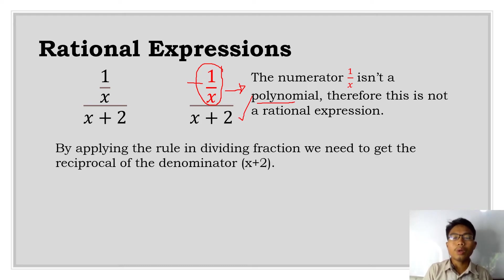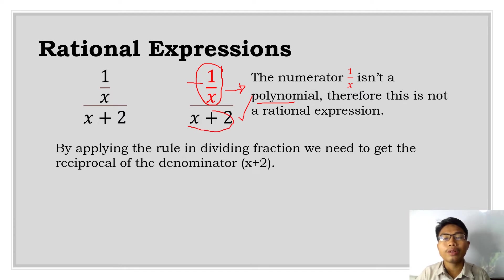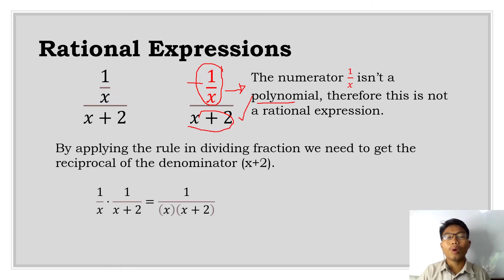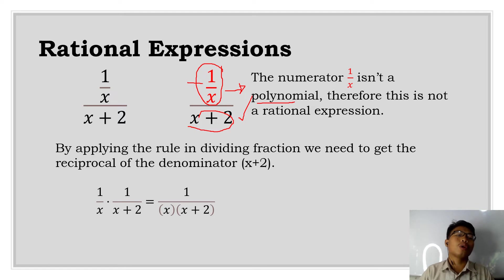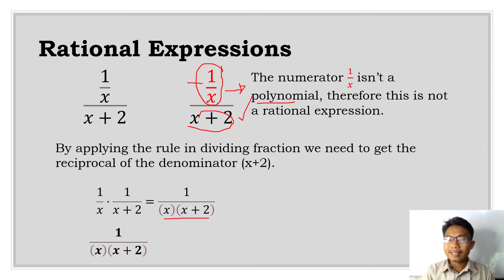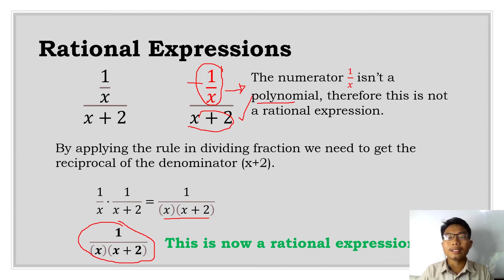However, we can apply algebraic simplification. Since x plus 2 is your denominator, we get the reciprocal of the denominator. When dividing fractions, we take 1 over x as our numerator, change the operation to multiplication, and multiply by 1 over x plus 2 — the reciprocal. So 1 times 1 is 1, and x times x plus 2 gives us 1 over x(x+2). The example is now a rational expression because the numerator is no longer a non-polynomial.